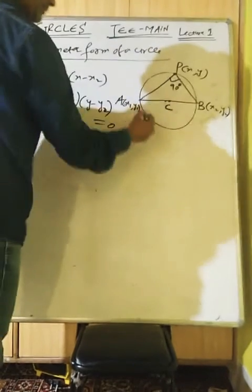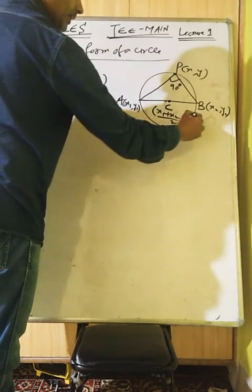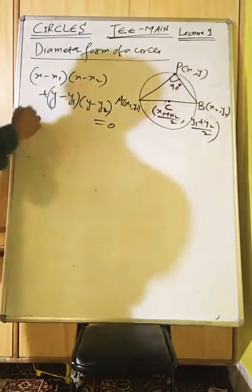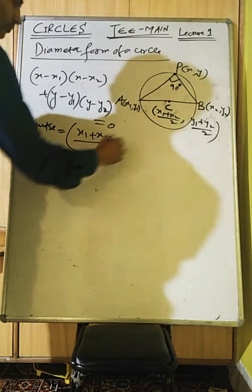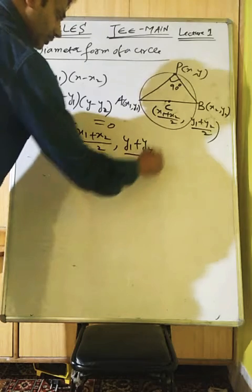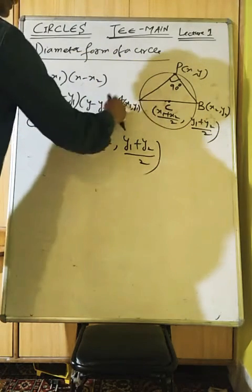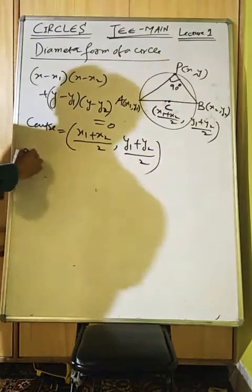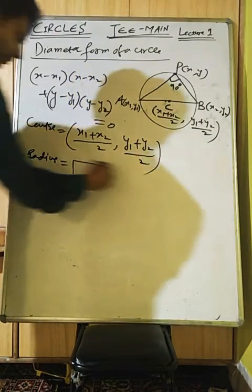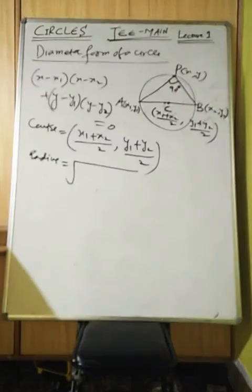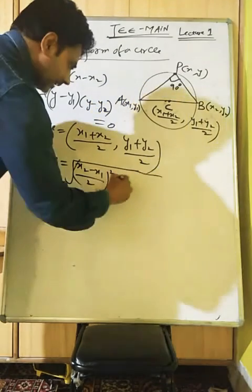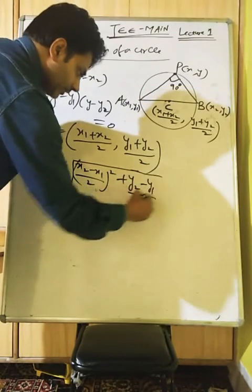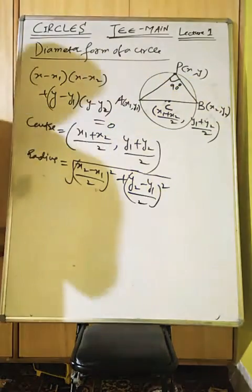The center is the midpoint of A and B, so center = ((x₁+x₂)/2, (y₁+y₂)/2). The radius, using the distance formula from center to endpoint, is: √[((x₂−x₁)/2)² + ((y₂−y₁)/2)²].